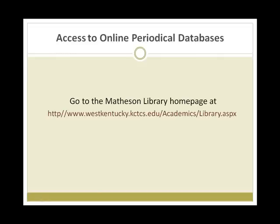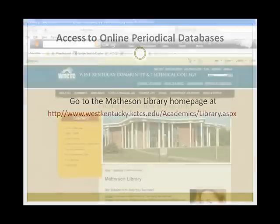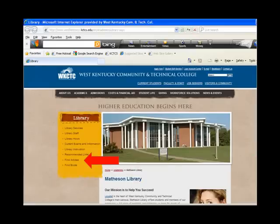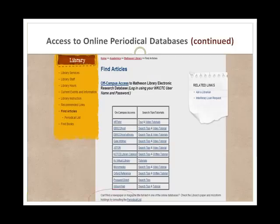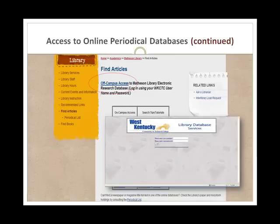In order to access the periodical databases, go to the Matheson Library homepage and click Find Articles. If on campus, select the database you would like to use from the database listing. If off campus, click on Off Campus Access at the top of the page and enter your KCTCS logon information.